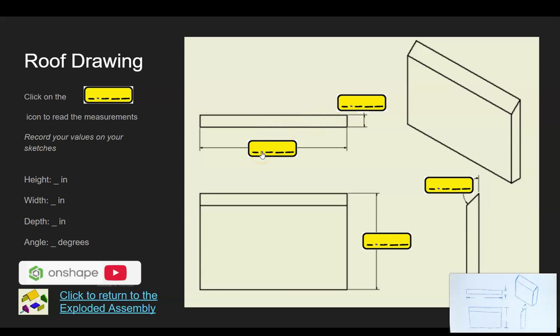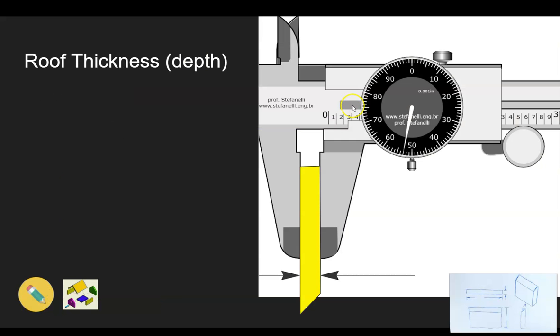If you look down on the right hand corner of the screen, you can see I've already sketched this out on paper. This is what you'll need to do - create your own sketch of your roof drawing and all the other parts in the model. Now we're going to take the measurements of the parts for this object. Let's measure the thickness of this part by clicking on the yellow thickness measurement icon.